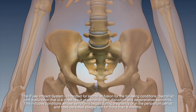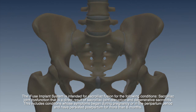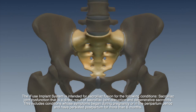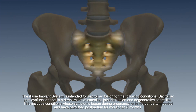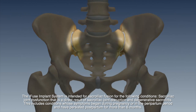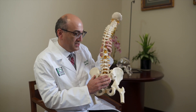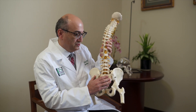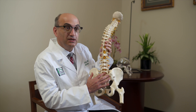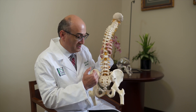So where is your sacroiliac joint? It's where your pelvis, or your hip bone, connects to your sacrum. It's a joint which moves very little. It's stabilized through multiple ligaments, which are some of the strongest ligaments in your body.